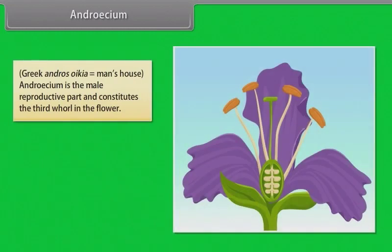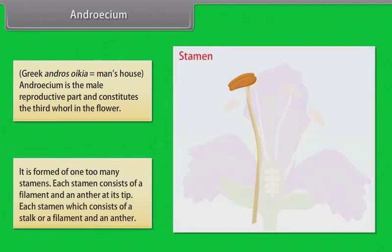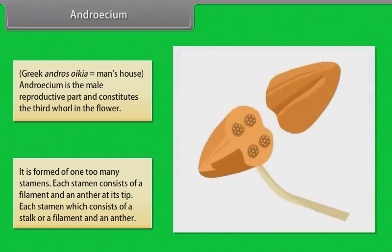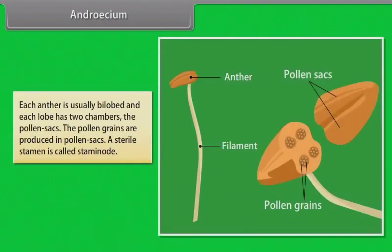Androecium is the male reproductive part and constitutes the third whorl in the flower. It is formed of one to many stamens. Each stamen consists of a filament and an anther at its tip. Each anther is usually bilobed and each lobe has two chambers called pollen sacs. The pollen grains are produced in pollen sacs. A sterile stamen is called staminode.